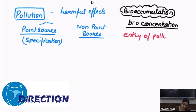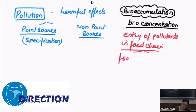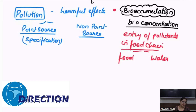Bioaccumulation or bioconcentration is basically defined as the entry of pollutants into the food chain. It can enter via any of two routes: it can enter by food or it can enter by water. Bioaccumulation is entry — it is also called bioconcentration. You can encounter that kind of straightforward question.